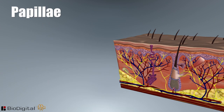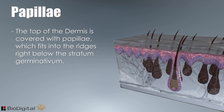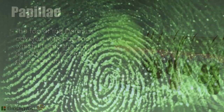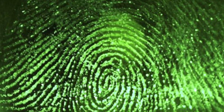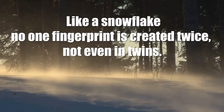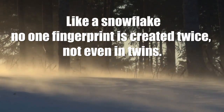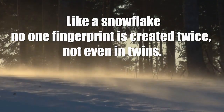The papilla — the top of the dermis is covered with papilla, which fits into the ridges right below the stratum germinativum. The papilla are responsible for creating fingerprints and footprints. Like a snowflake, no one fingerprint is created twice, not even in twins.